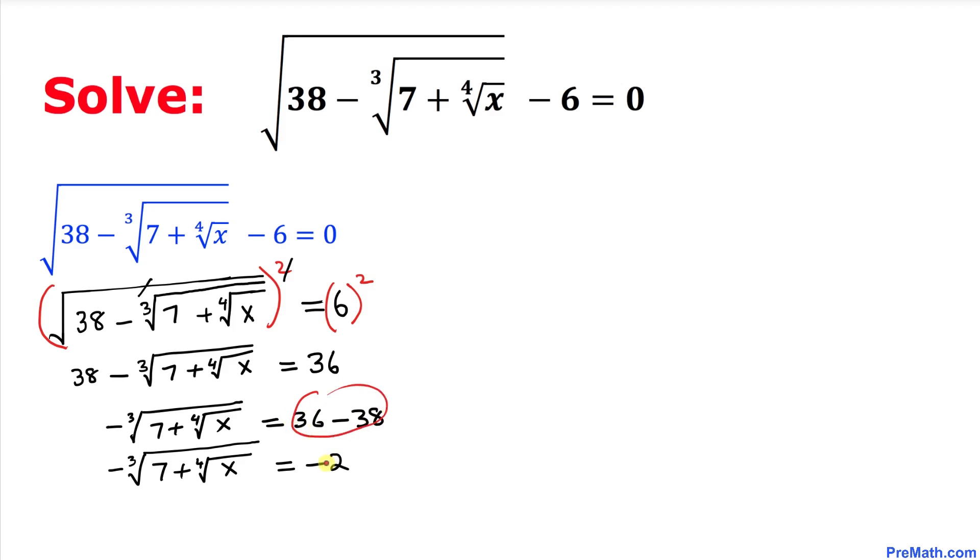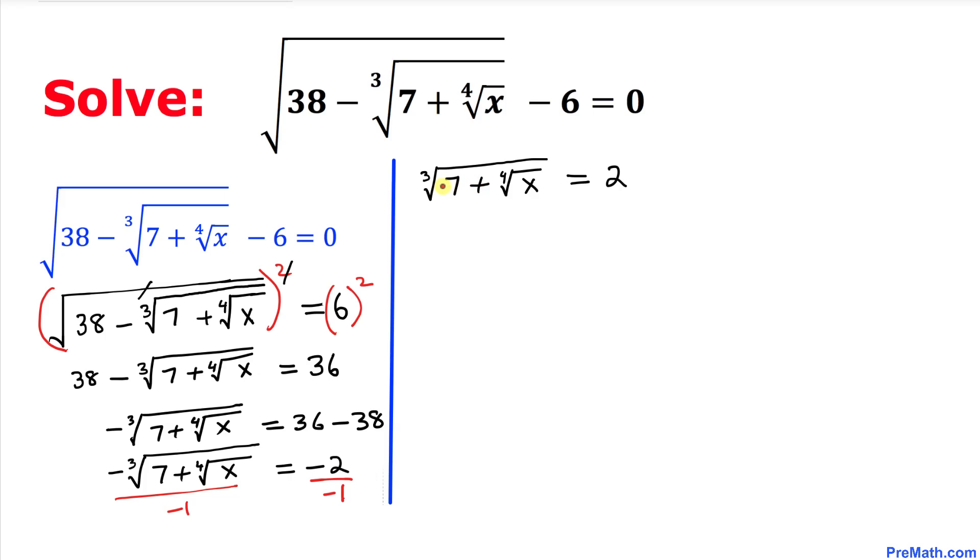Now as you can see we got negative signs on both sides, so I can remove those negative signs by just dividing both sides by negative 1. Now on the right hand side you can see we no longer have a negative sign on both sides.